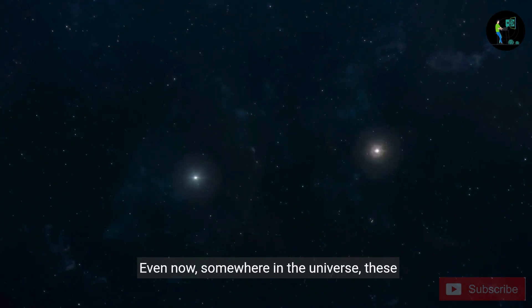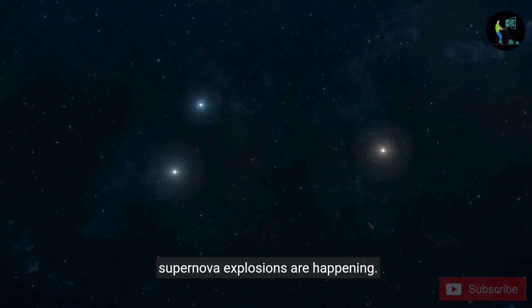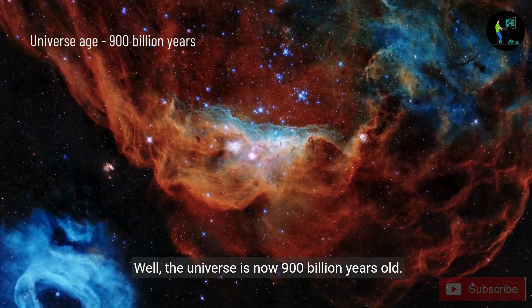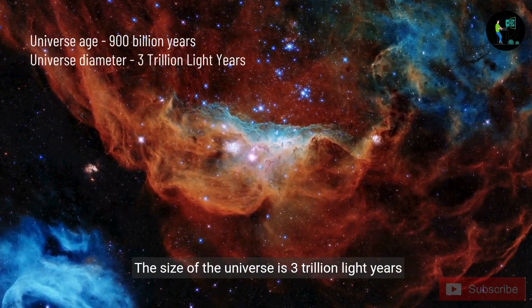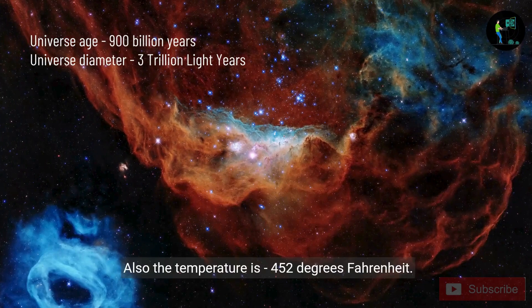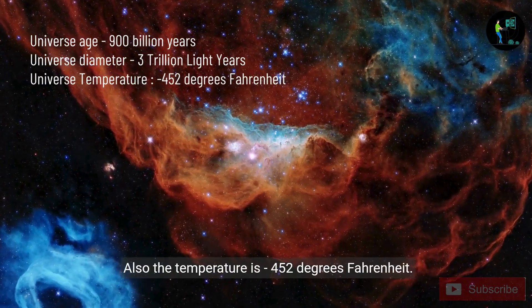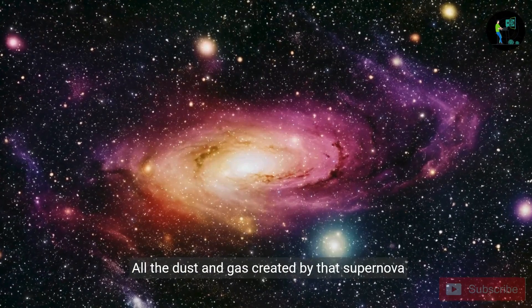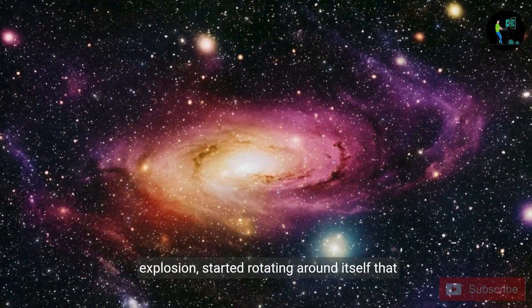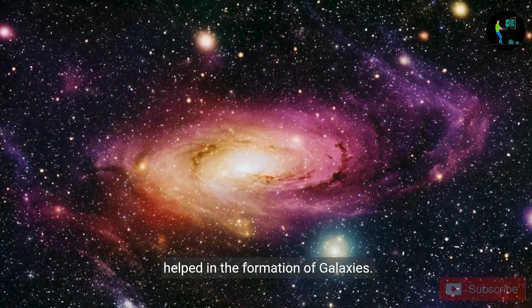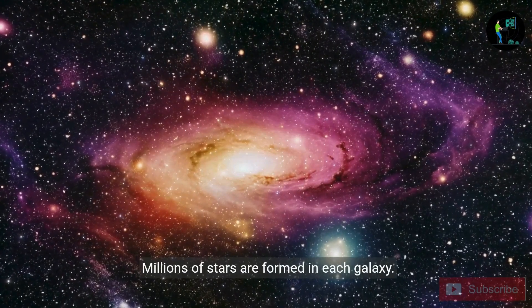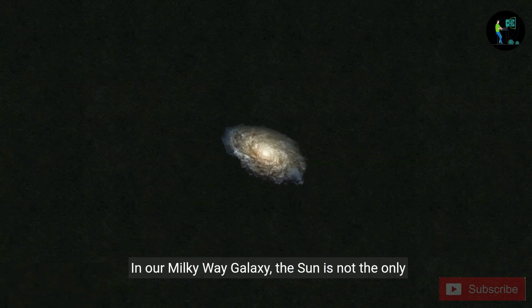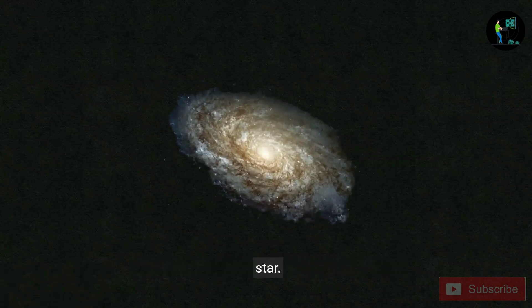Even now, somewhere in the universe, these supernova explosions are happening. Well, the universe is now 900 billion years old. The size of the universe is 3 trillion light years long. Also, the temperature is Maya 452 degrees Fahrenheit. All the dust and gas created by that supernova explosion started rotating around itself that helped in the formation of galaxies. Millions of stars are formed in each galaxy. In our Milky Way galaxy, the Sun is not the only star. There are approximately 30 billion other and bigger stars like our Sun.